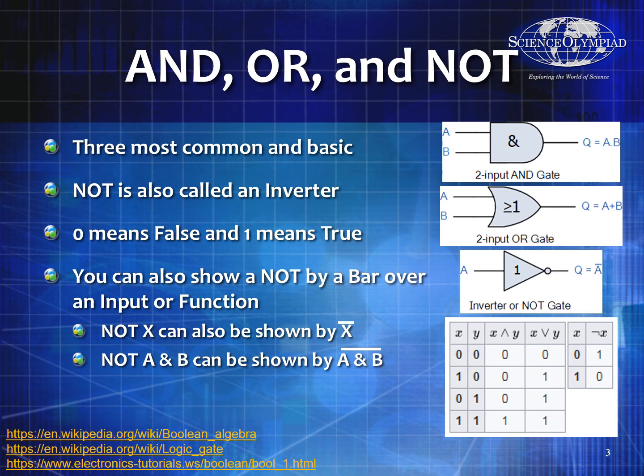AND, OR, and NOT — these are the three most common and basic logic gates. NOT is also called an inverter, because basically if I give it a zero, a NOT will give me a one. If I give it a one, a NOT will give me a zero. It will always give you the opposite of whatever you receive.